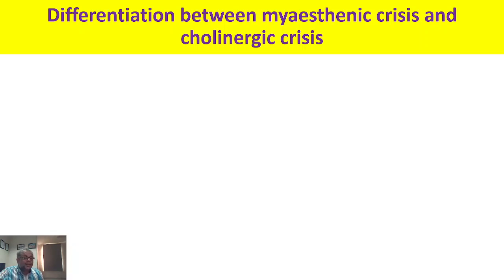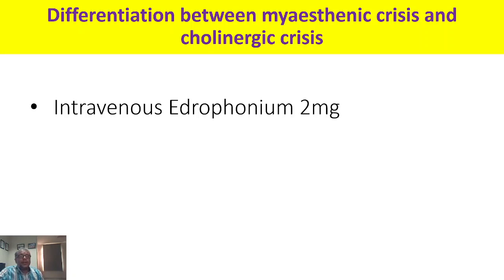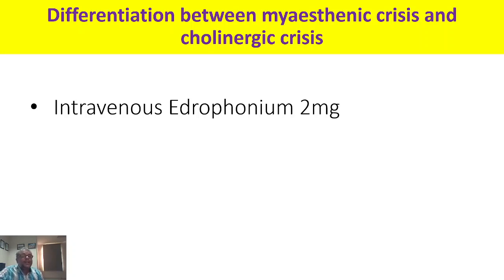There is one agent that helps: intravenous edrophonium, 2 mg IV stat. Edrophonium has a structure similar to neostigmine but is a weaker cholinesterase inhibitor with a very rapid onset and very short duration of action. If the patient is having myasthenic crisis and you give IV edrophonium, the condition improves — confirming myasthenic crisis. If the patient has cholinergic crisis, the condition worsens, but this is not troublesome because the effect lasts no more than 10 minutes.